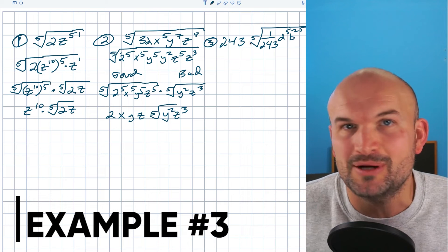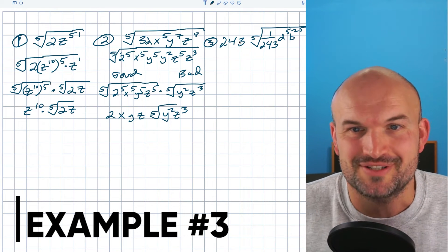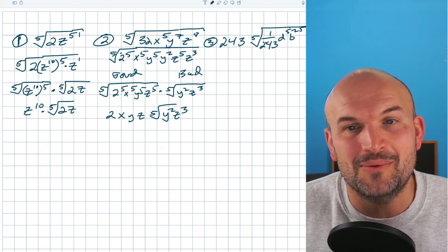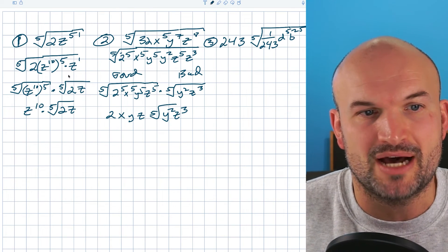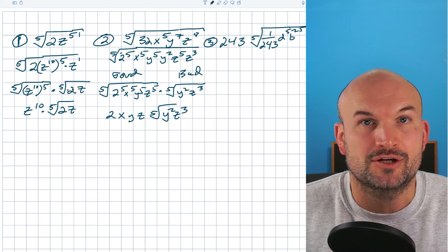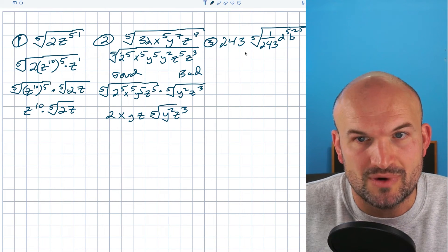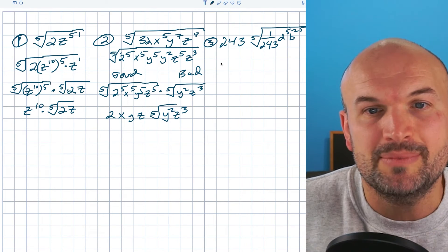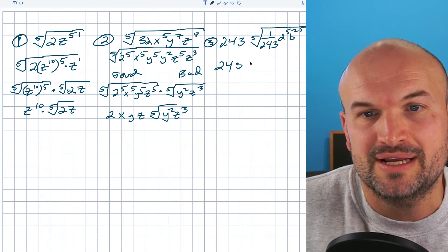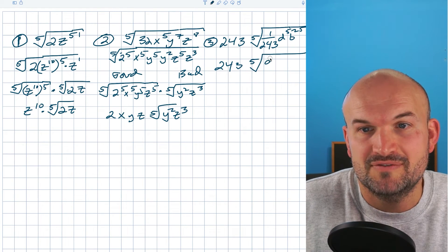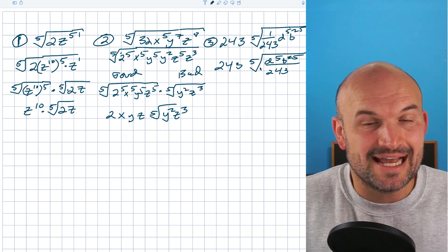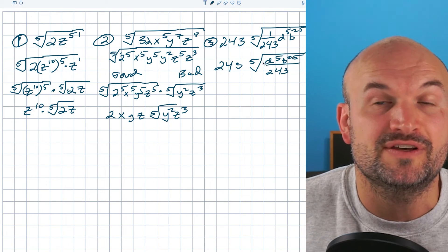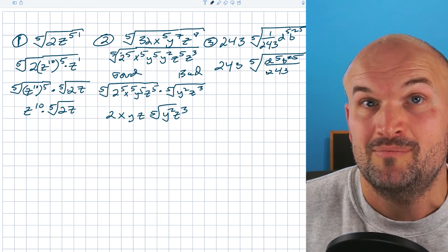Now, the last example, nobody really wants to do. Nobody loves fractions, but fractions are real numbers too. So we can definitely do this problem. We just need to remember our rules of radicals. Just like I can break up a radical across multiplication, I can also break up a radical across division. So what I'm going to do is rather than thinking about this as 1 over 243, I'm going to rewrite this problem as 243 on the outside times the fifth root of d to the fifth b to the 25th, all over 243. And I can break this up now into the fifth root of my numerator over the fifth root of my denominator.